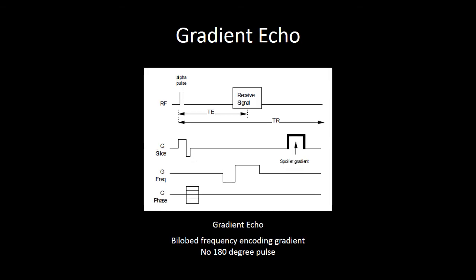When we look at our gradient echo sequence diagram, we see some differences. Along the radio frequency line, we see what is labeled as an alpha pulse. That alpha pulse is going to be something less than 90 degrees. We see that there is no 180-degree pulse between that alpha pulse and when you receive your signal, because the echo is actually going to be generated through gradient switching. You can see here the frequency encoded gradient is reversed immediately before you start to receive your signal. We still have the slice select gradient, which has to be activated during your initial radio frequency pulse, and we still have a variable phase encoded gradient, depending on which line of k-space you're filling.